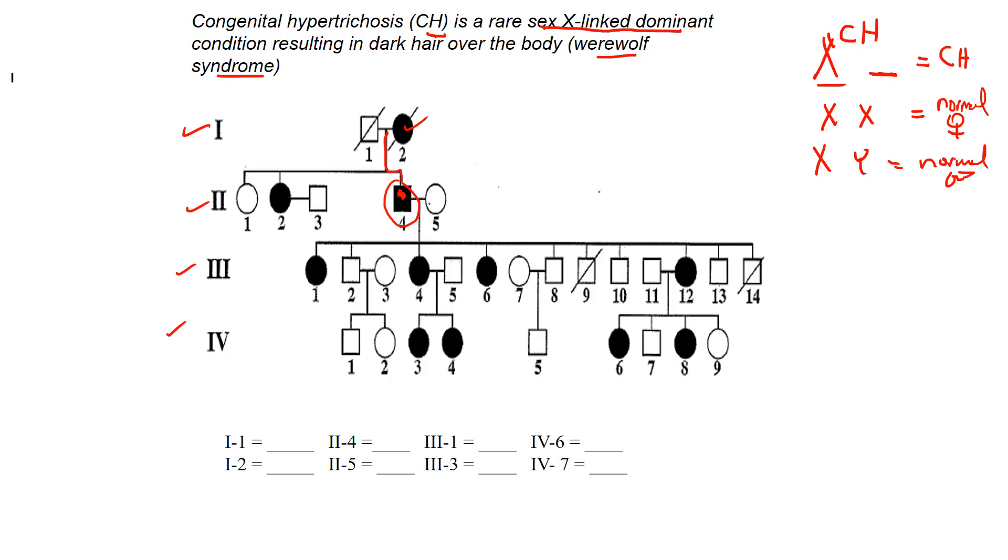The other piece of that is every affected male must have all affected daughters. They must be affected because he's giving the daughter the X with the CH. Okay? So all of them must be. So let's take a look at that. Look at the line.